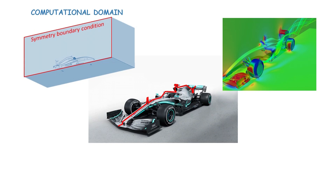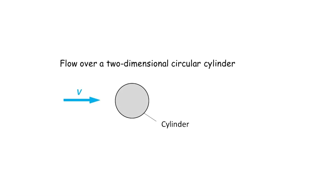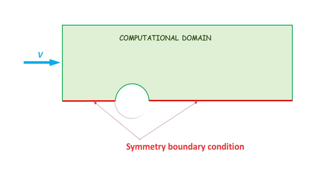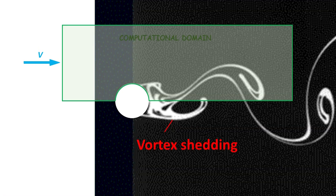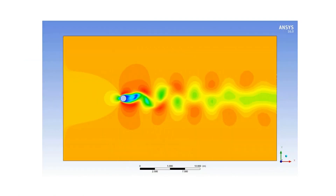We need to be careful when assuming that the flow is symmetric. For some cases, even though the geometry of the body is symmetric, the flow around it may not be symmetrical. For instance, for the flow over a two-dimensional circular cylinder, it may be tempting to assume that the flow is symmetric because the cylinder is symmetric. However, at certain Reynolds number ranges, vortex shedding will occur and render the flow unsteady and unsymmetrical. Thus, the assumption that the flow is symmetric is wrong. To correctly model the flow, the computational domain should include both the upper and lower sides of the flow and perform an unsteady simulation, enabling the CFD to capture the vortex shedding phenomenon.